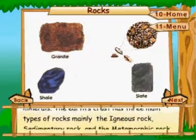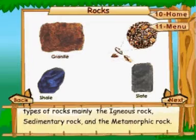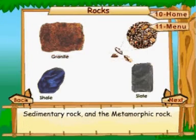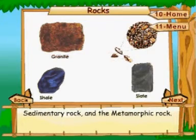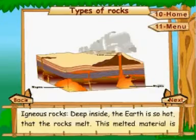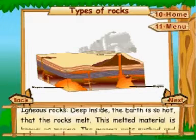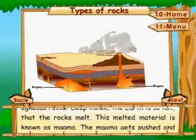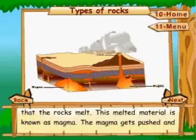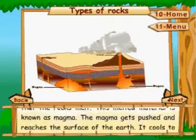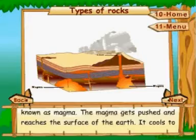The three main types of rocks are: igneous rock, sedimentary rock, and metamorphic rock. Igneous rocks: deep inside the Earth it is so hot that the rocks melt. This melted material is known as magma. The magma gets pushed and reaches the surface of the Earth.